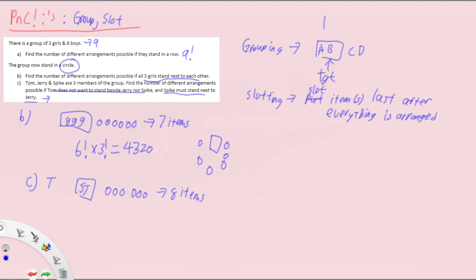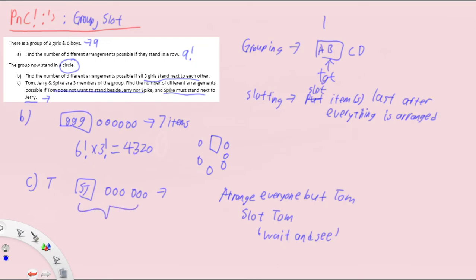So the idea is to leave Tom last — we wait to see where Jerry and Spike are placed, then slot Tom in at the end. First, arrange everyone except Tom: seven items in a circle gives six factorial. Don't forget Spike and Jerry can also be arranged within their group: two factorial. Now we have the Spike-Jerry group and six others arranged. Tom can only take up five slots.